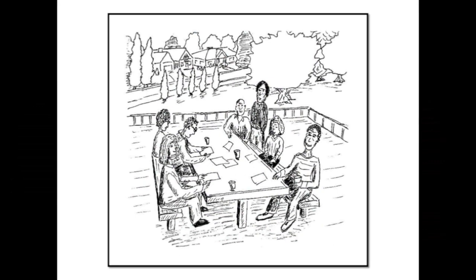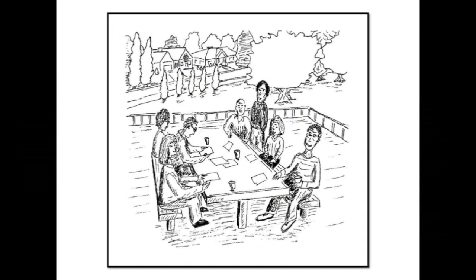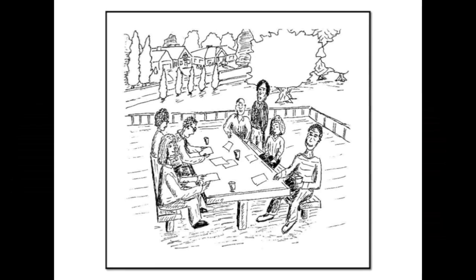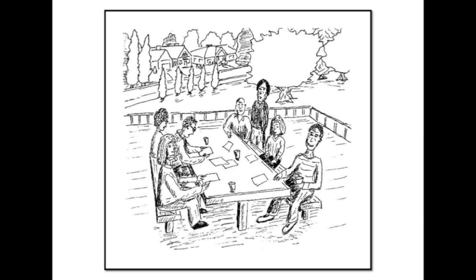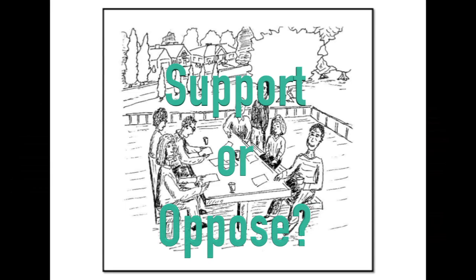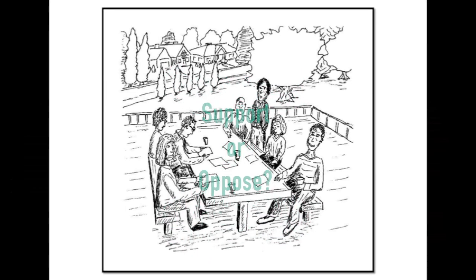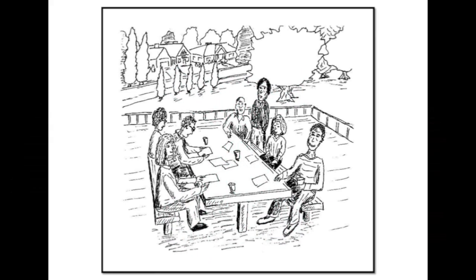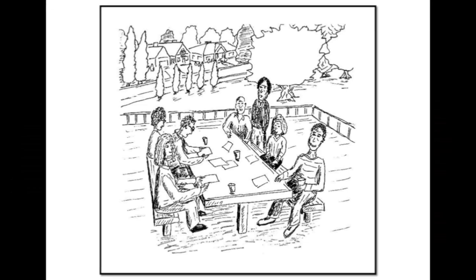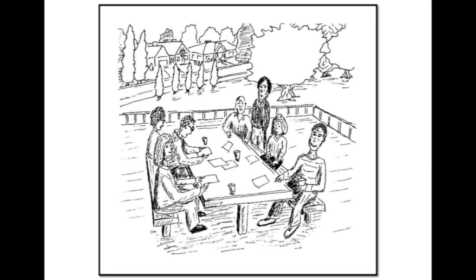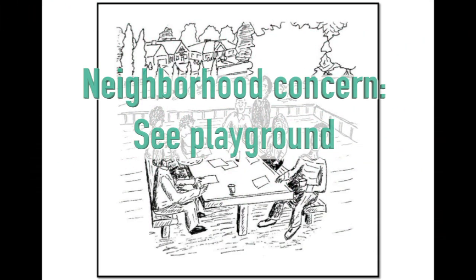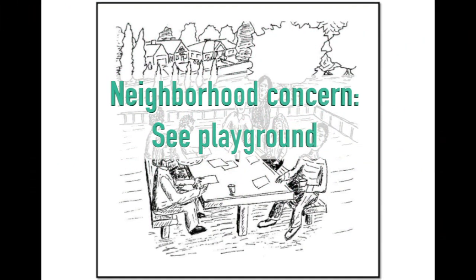After receiving the notification, the neighborhood association reviews and discusses the land use proposal at their regular meetings. They then decide whether to offer their support or opposition. In the case of this child care center, they have decided to support the proposal and also submit comments to the City stating the neighbors' concerns about being able to see the children's playground.